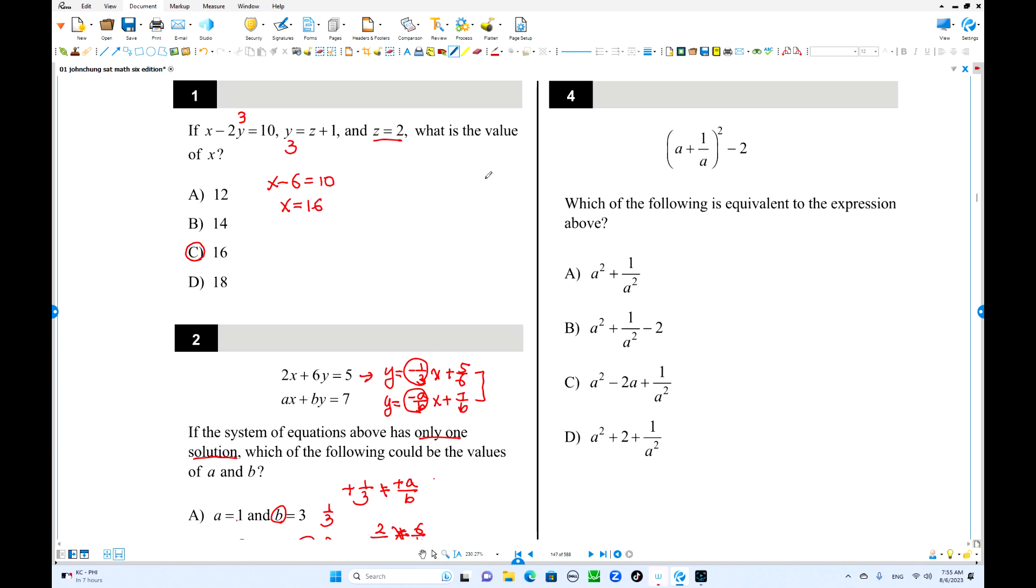The number 4. Find equivalent to this. You can expand this one square. A square. A square plus 1 over A square. This is the first. Second one is this times this times this one. 2 times A times 1 over A. Positive 2 and minus 2. This is cancelled out. This is the Q branch. So choice A is the answer.